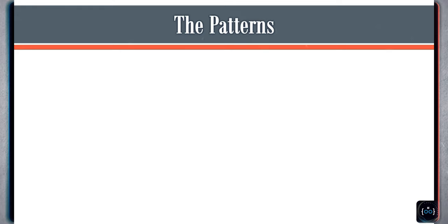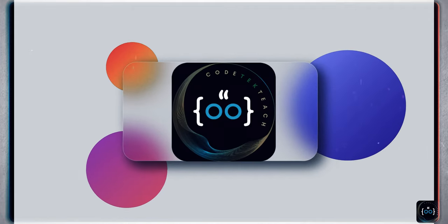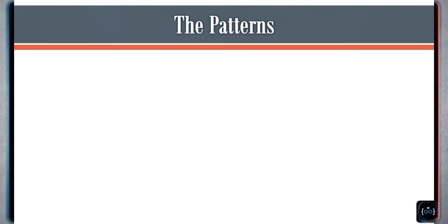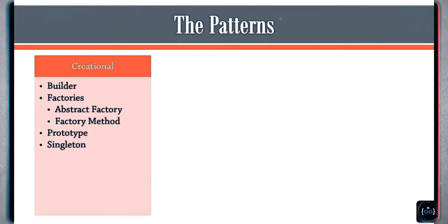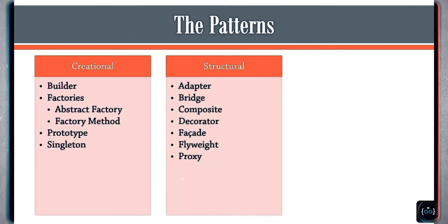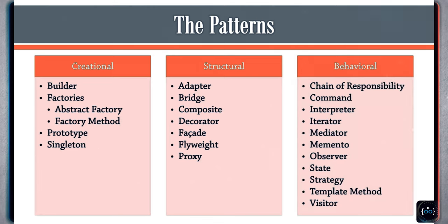In terms of the actual patterns, we're going to follow the same sets of patterns outlined in the original book, because not much has changed over the years and we haven't really moved on from the original pattern catalog. We'll talk about creational design patterns — the only change I've made is combining the two factory patterns, abstract factory and factory method, under a single section called Factories. Then we'll cover structural patterns and behavioral patterns, the same set as you'll find in various literature.